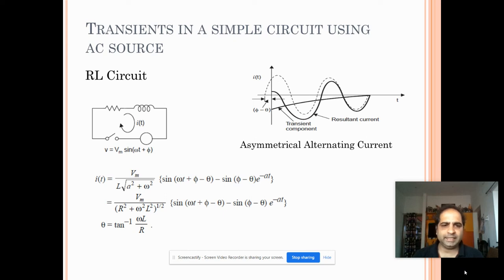Transients in a simple circuit using AC source. Whenever an AC source is applied for an RL circuit, the transients or the RL asymmetrical alternating current is as shown and the I of T is given by the formula which is shown in the slide. For calculating I of T, theta E is assumed to be tan inverse of omega L by R.